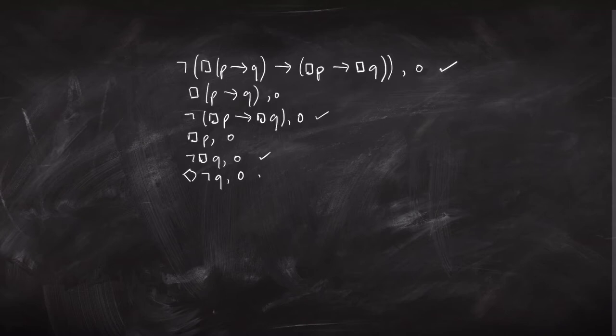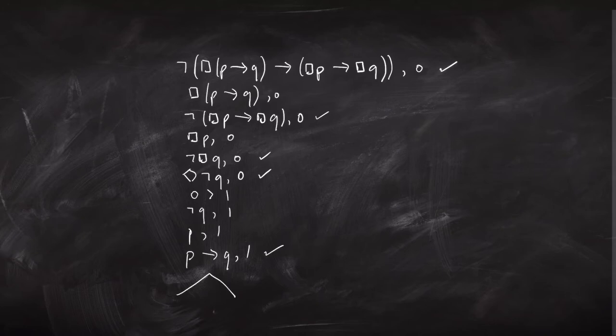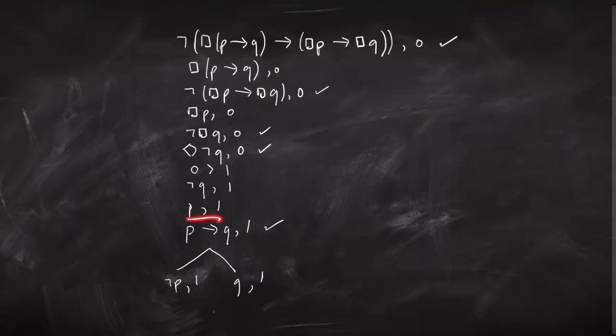We've got a diamond sentence, which introduces a new world. That new number can be one, so we write down zero-arrow-one — world one is accessible from world zero — and not-Q is true at world one. Since we've got box P at zero, we can infer P at world one, and likewise we can infer 'if P then Q' at world one. We know from propositional logic that this rule branches: we get not-P on the left at world one, Q on the right at world one. Checking for contradictions: we've got P at world one and not-P at world one — contradiction, close the left branch. On the right, we've got Q at world one and not-Q at world one — contradiction, close that branch.